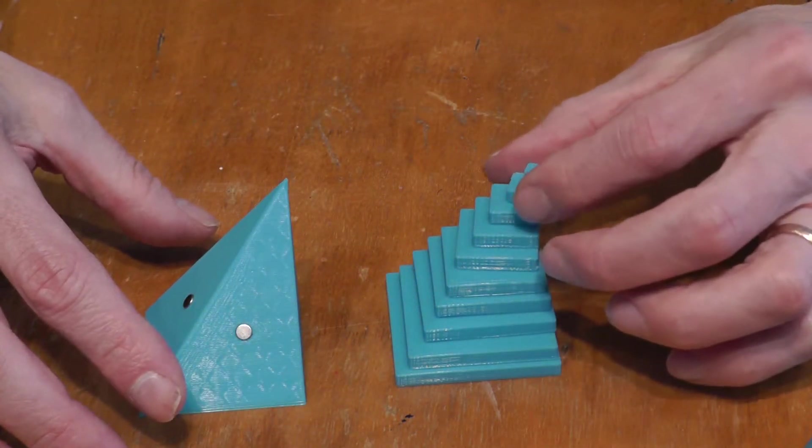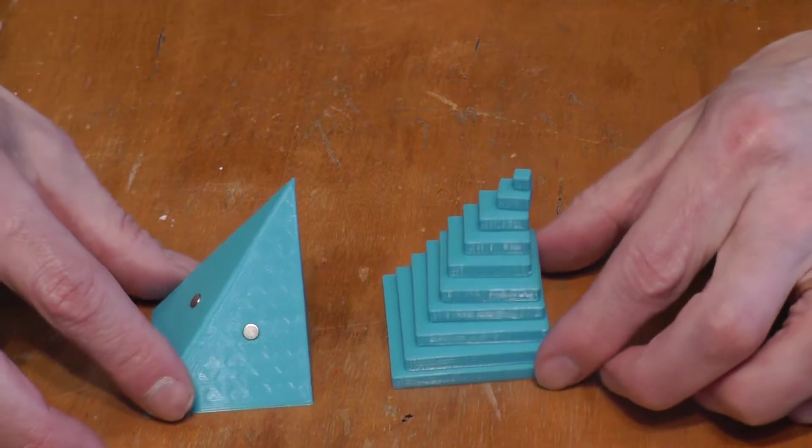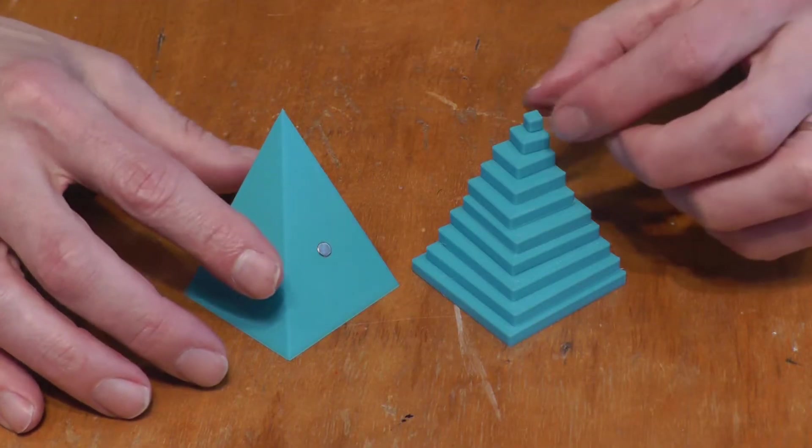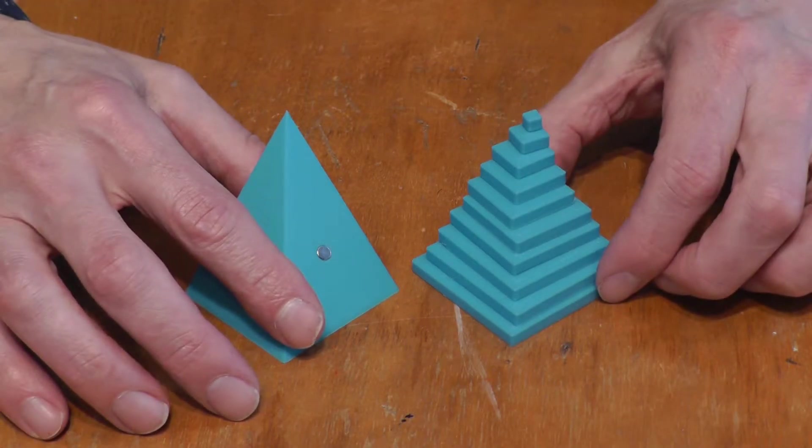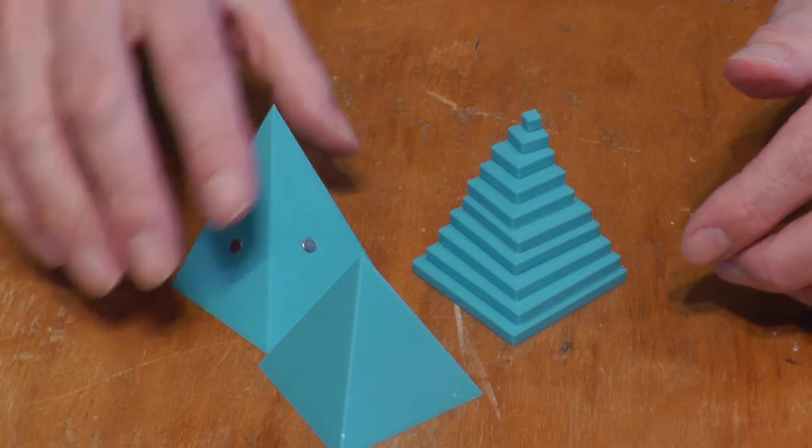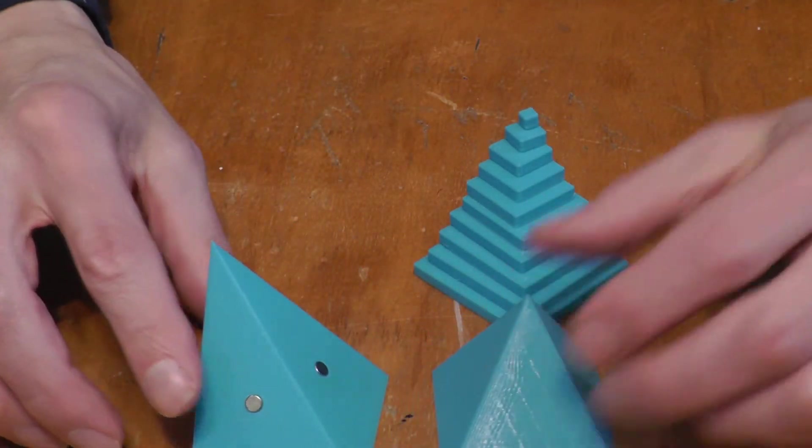And so this shape here now is exactly the same as this shape here. So I tried to show that this volume is the same as that volume, and so it's the same as this volume of this piece.